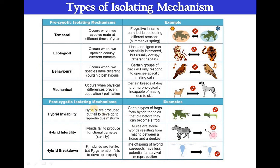Post-zygotic isolating mechanisms include hybrid inviability, where hybrids are produced but fail to develop to reproductive maturity; hybrid infertility, where hybrids fail to produce functional gametes resulting in sterility; and hybrid breakdown, where F1 hybrids are fertile but F2 generations fail to develop properly.